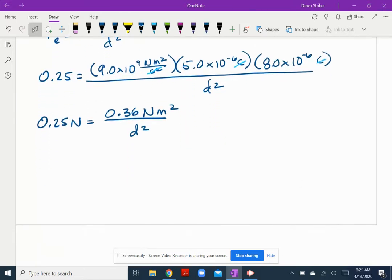So now what do I do? Well, this 0.25 Newtons is really the same as 0.25 divided by one. And if you think about it that way, you could cross multiply. So 0.25 Newtons divided by one is equal to 0.36 Newton meter squared divided by D squared. Cross multiplying.